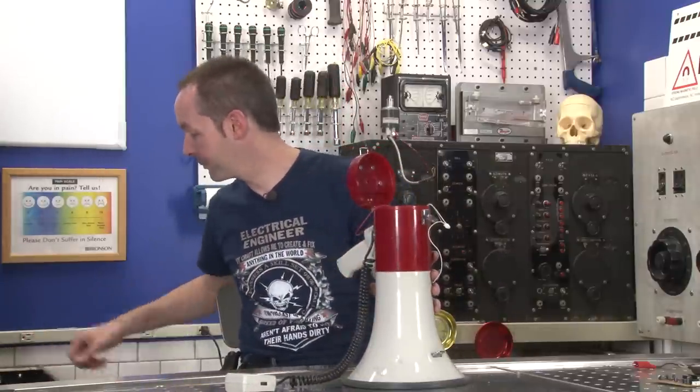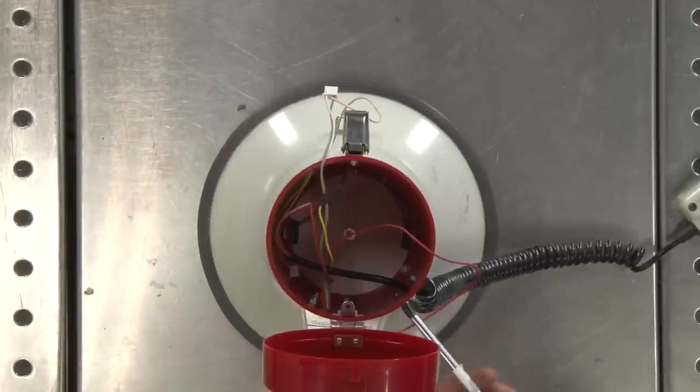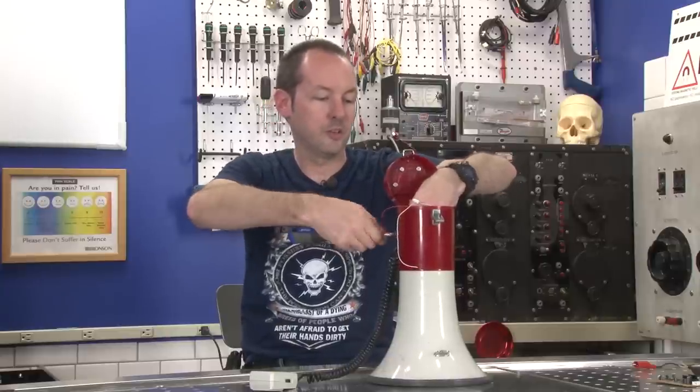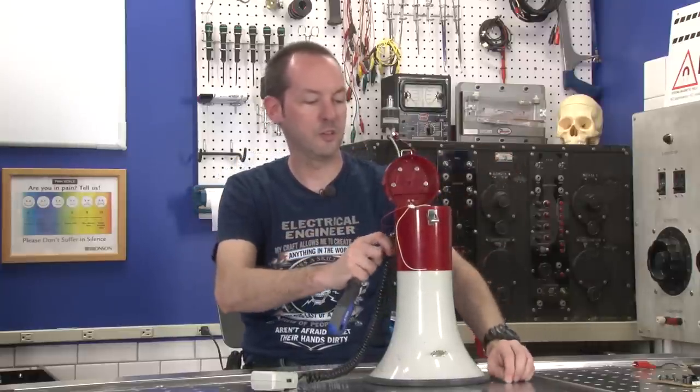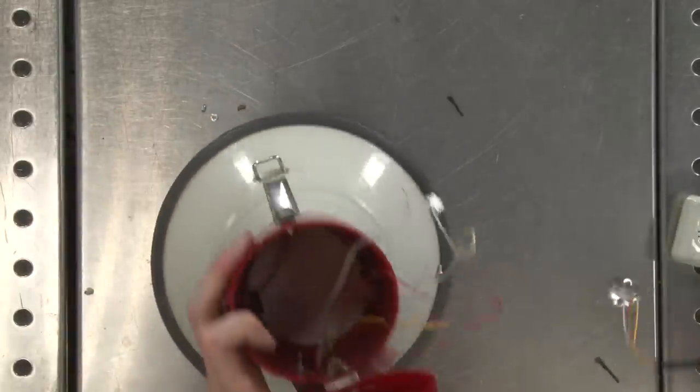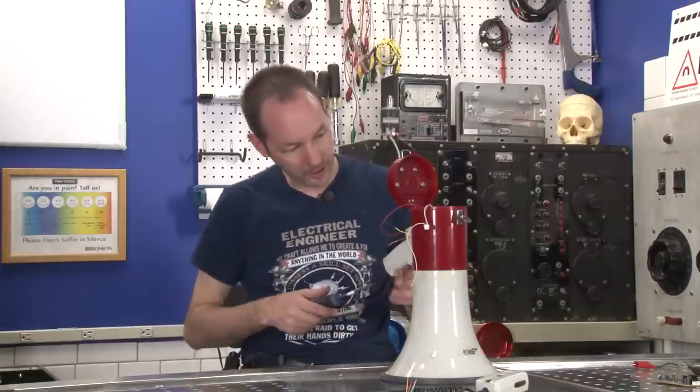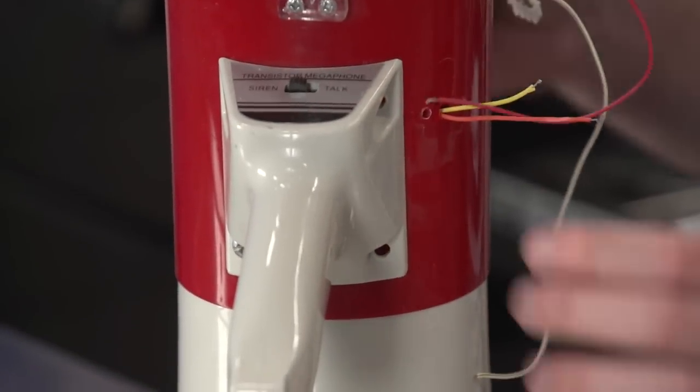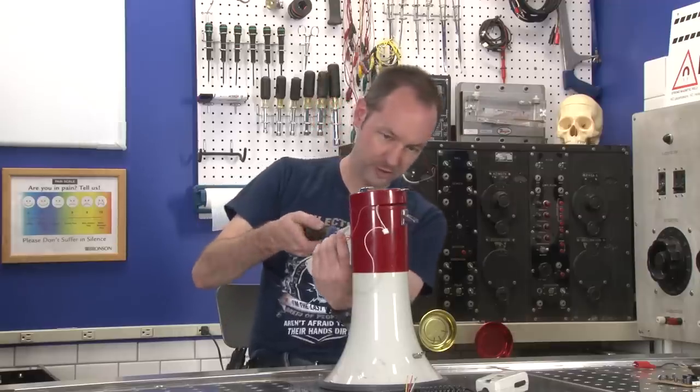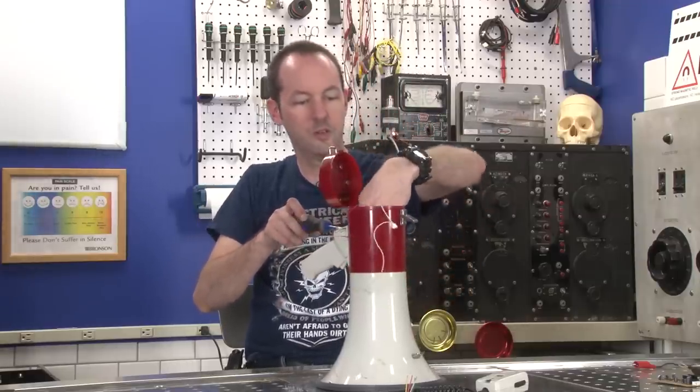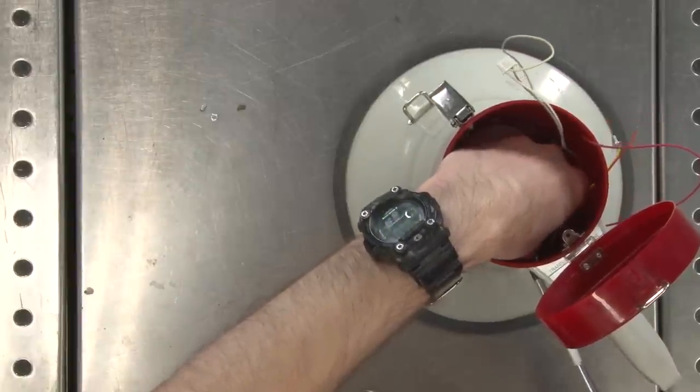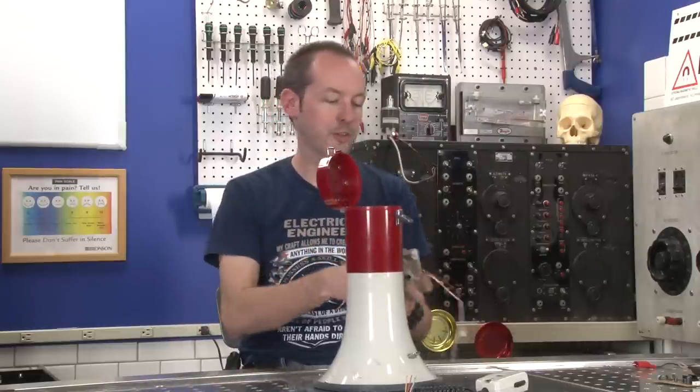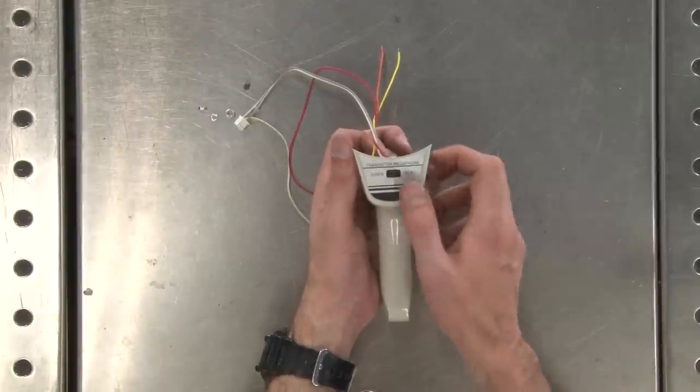Let's take it apart. See what we can see. Going for my trusty number two Phillips. Oh, there's nuts on the inside. There. So there's the mic, which we'll actually keep because that's handy for something. Oh, look at this. I see missing screws right here. Two missing screws. This is what happens when other people try to fix things.